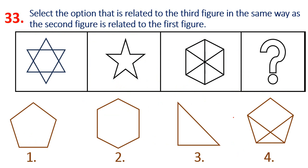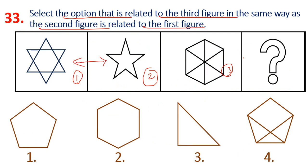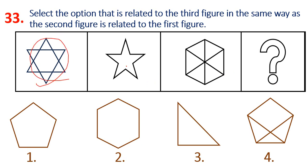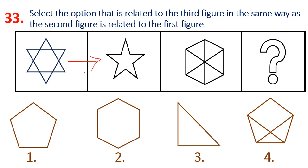Question 33: Select the option that is related to the third figure in the same way as the second figure is related to the first figure. Observing the first figure - it has 6 corners. The second figure has 5 corners. So we're looking at the relationship between those two figures.